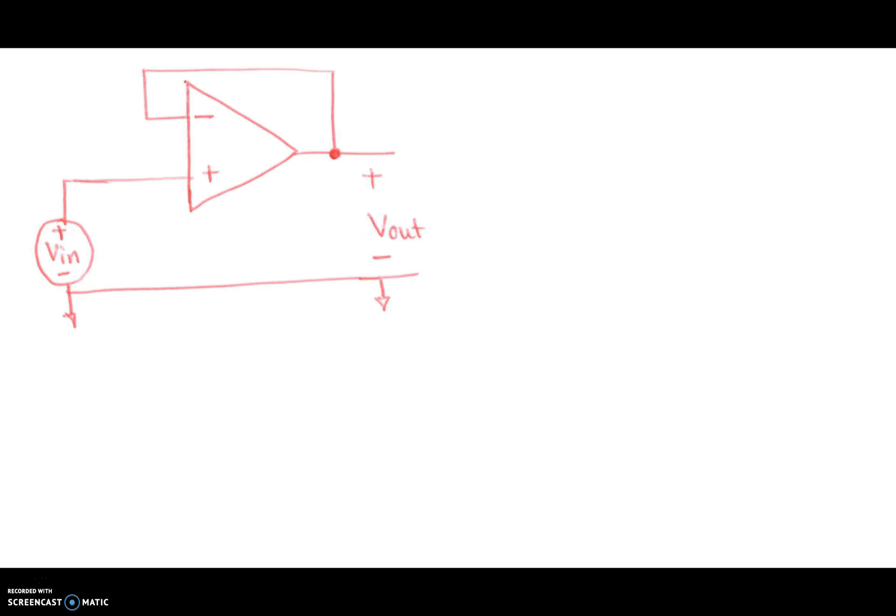So here, we'll again use ideal op-amp. Ideal op-amp basically says no current goes through there, and that the voltage at this node and the voltage at this node, the inverting and the non-inverting ends, are equal.